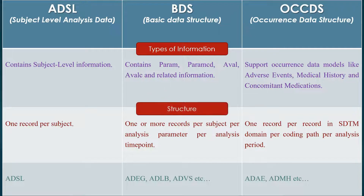Next let's see the structure of each dataset. In ADSL it's one record per subject. In BDS it's one or more records per subject, per analysis parameter, per analysis time point. These BDS datasets we can relate with our SDTM findings domains.